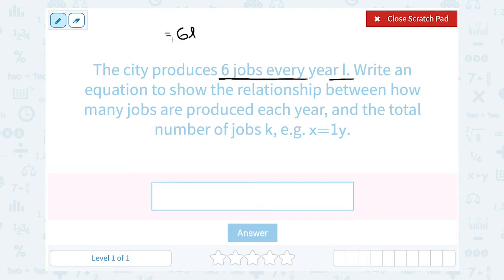Now that's going to be equal to the total, right? The total number of jobs is K. So we're going to say K, the total number of jobs, is equal to six times the number of years that have passed.